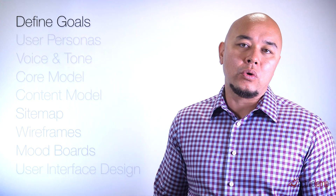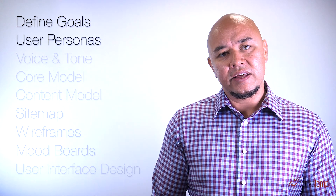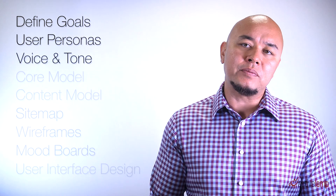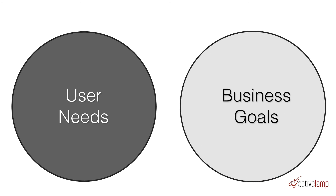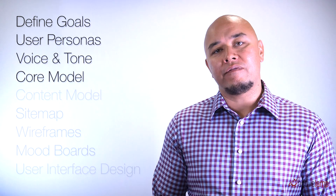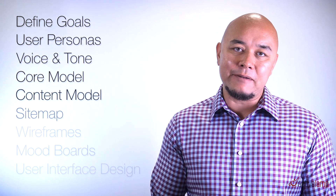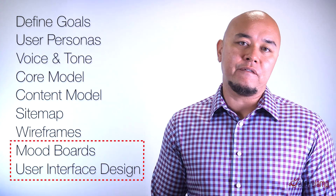Our discovery process looks like this. You want to first define your goals and objectives of the site, then develop user personas around who is using the site. Establish what your voice and tone of the website will be — for example, is your content quick and to the point, or friendly and unassuming of your users? Next, you want to create a core model to define what's important to your users and what's important to the business, and figure out what is the nexus of those needs. After all of that, you can get into defining your content model, sitemap, and wireframes. We're going to jump straight to the design process — mood boards and user interface design.